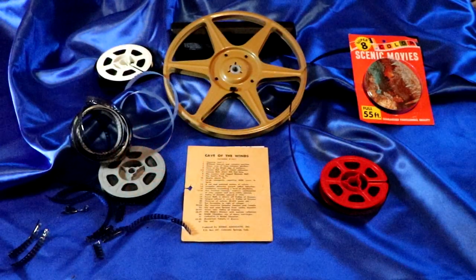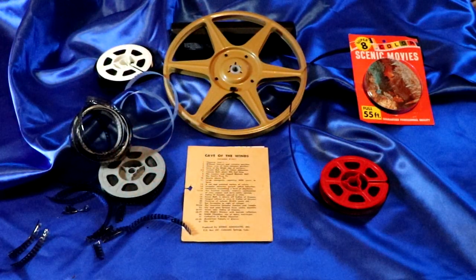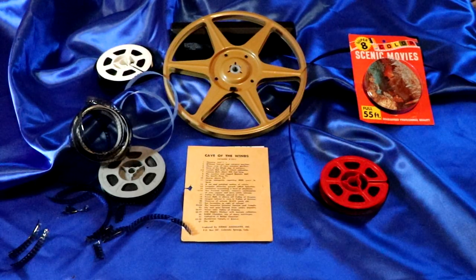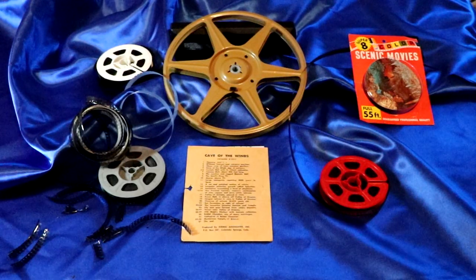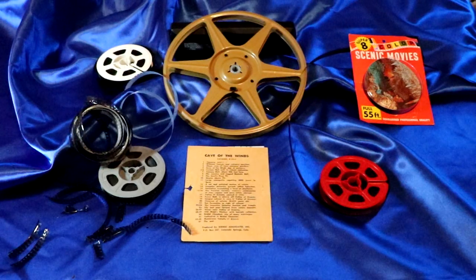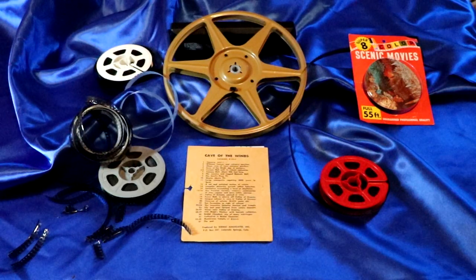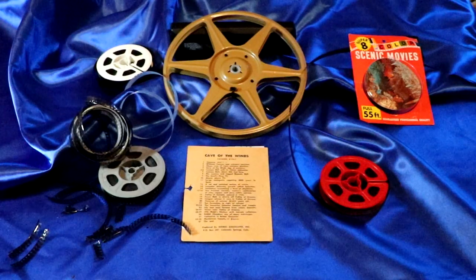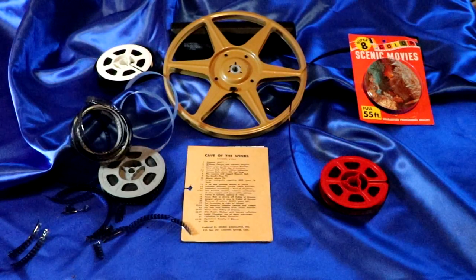8mm film was introduced in 1932 by Eastman Kodak. Initially it was simply a black and white home movie format, but as the popularity increased, pre-filmed reels of film were marketed and in 1936, color was added to Kodachrome home movies.